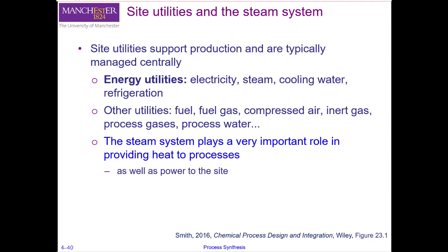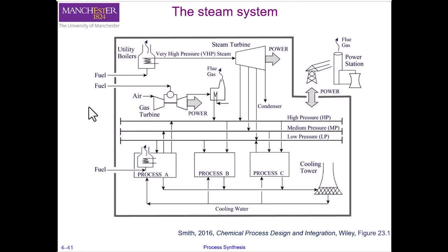Here we distinguish between site utilities and energy utilities. Our focus is on the energy utilities, including boilers, furnaces, steam generation, and power generation using steam, as well as the cooling utilities. Please take a moment to appreciate the wider range of utilities that are typically needed on a chemical process site.